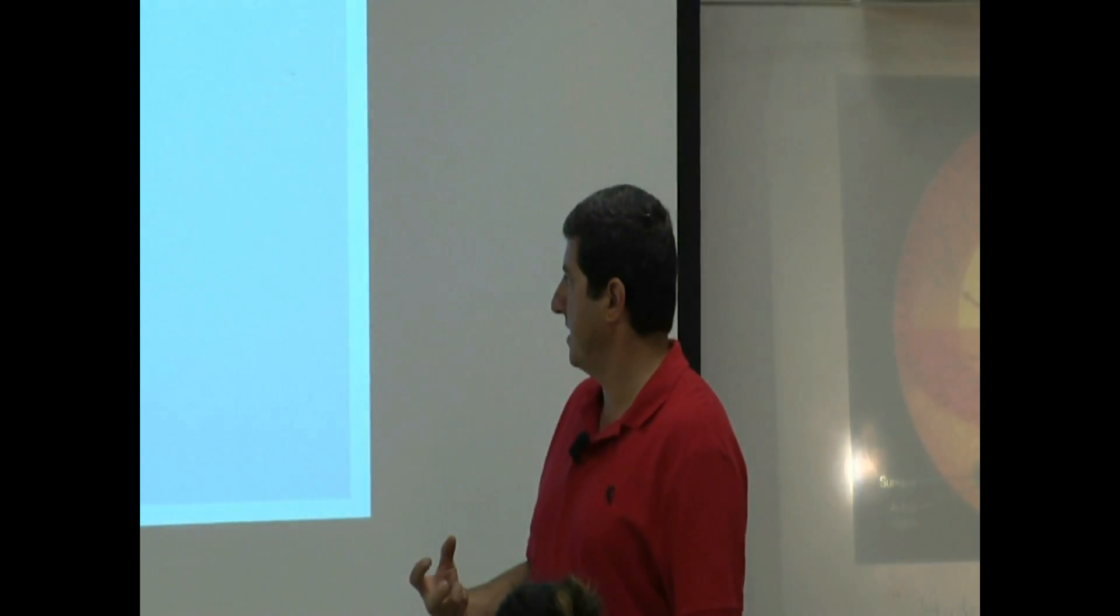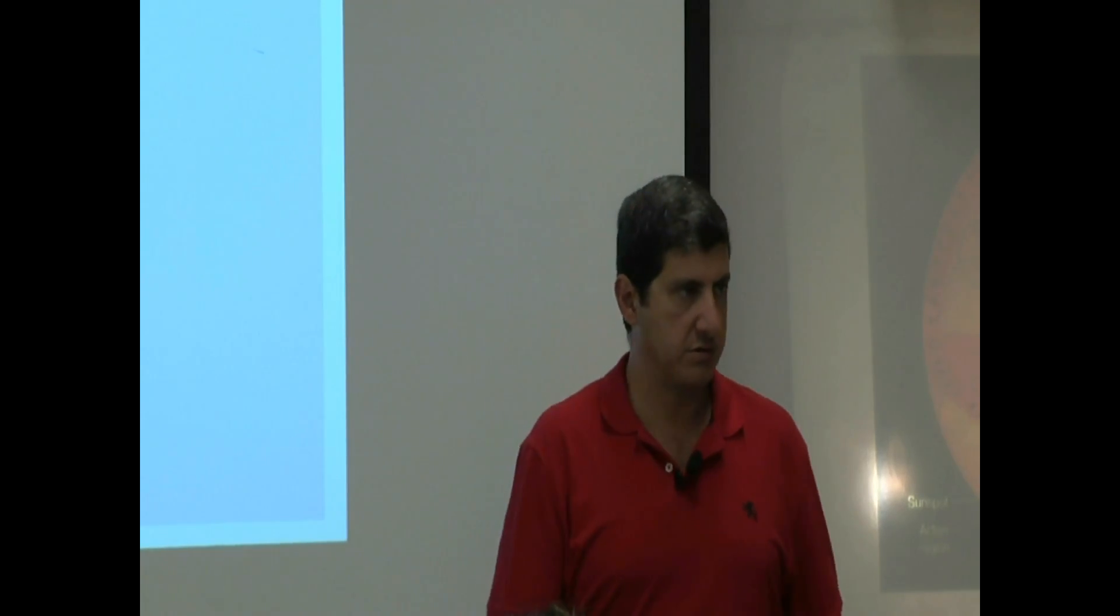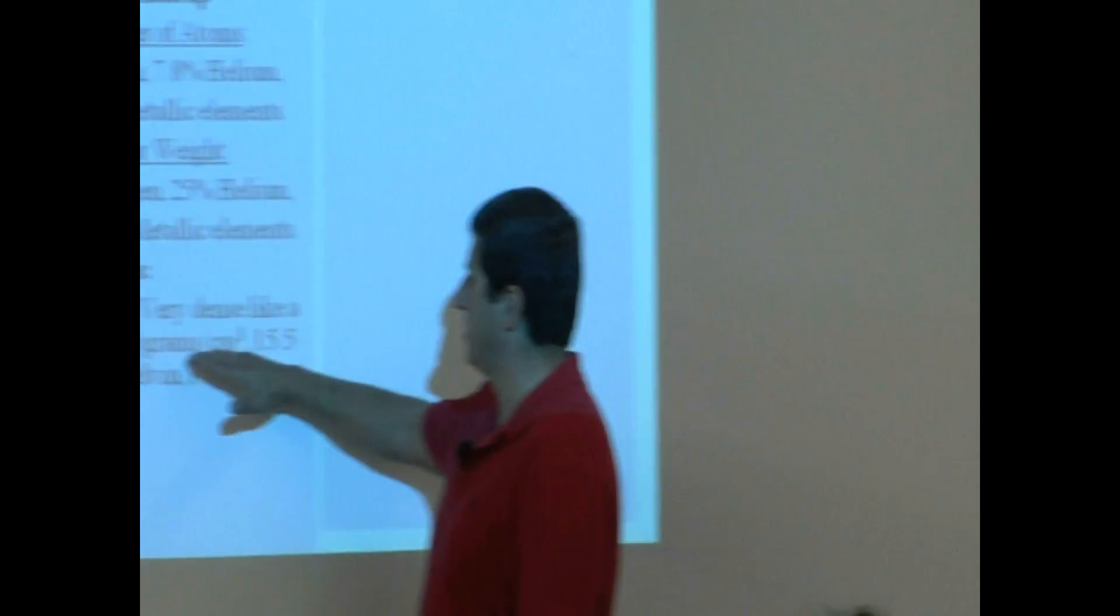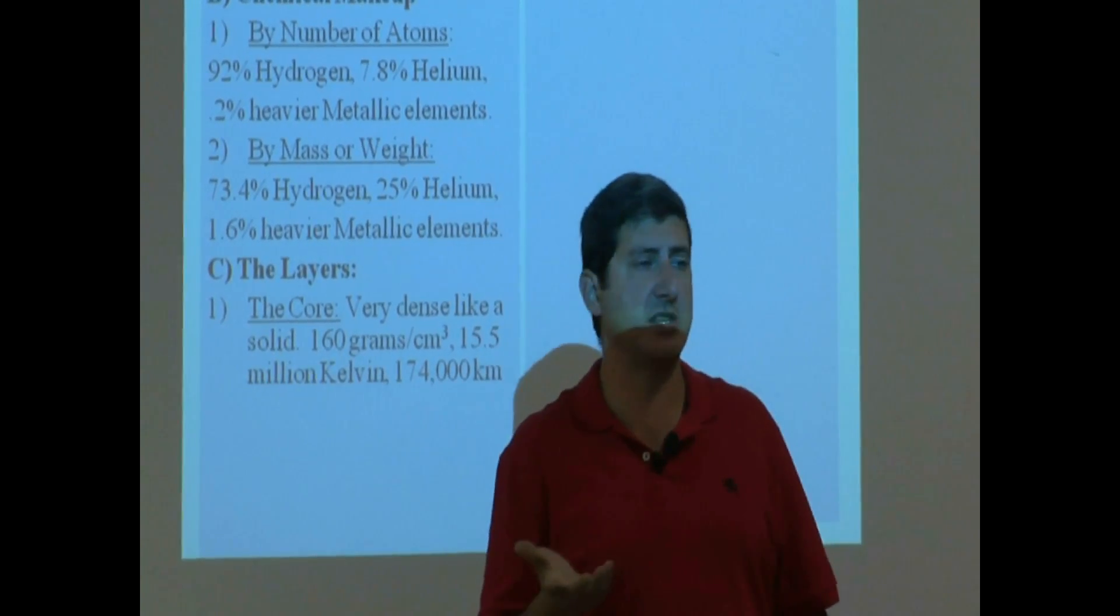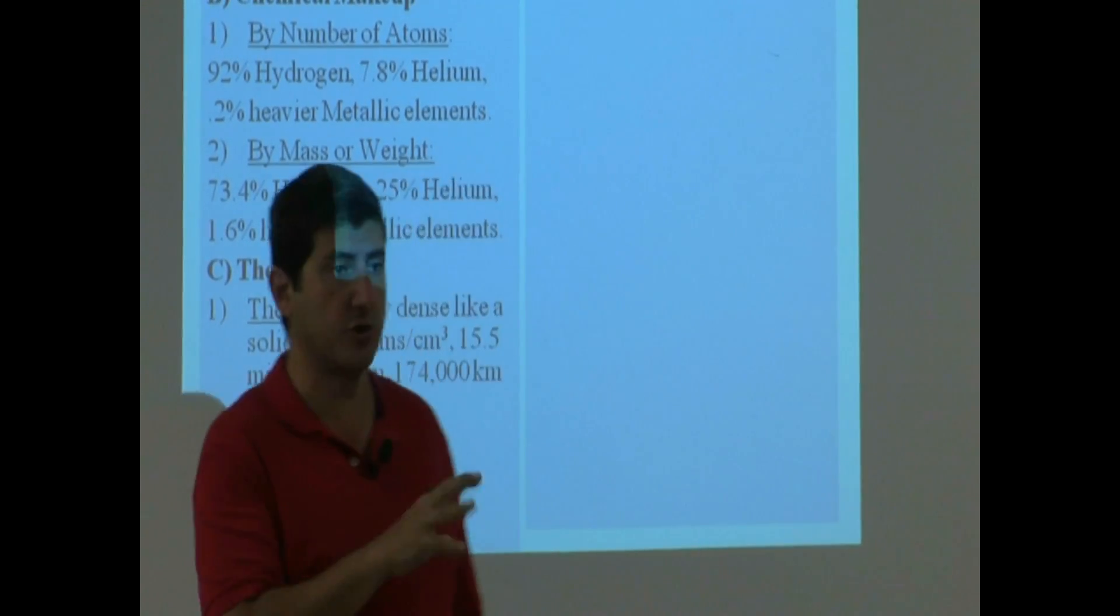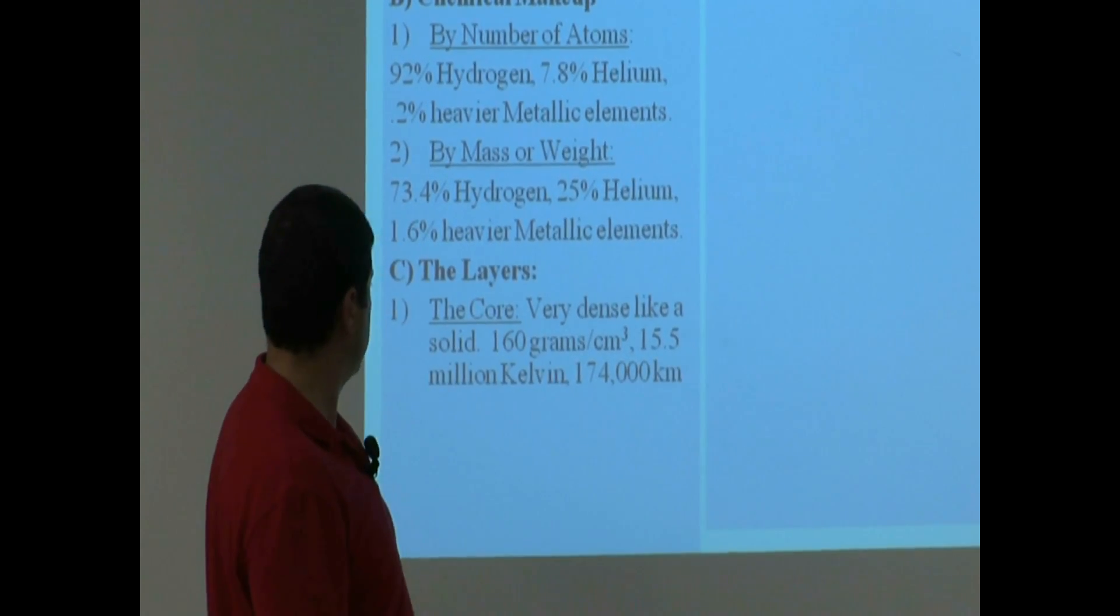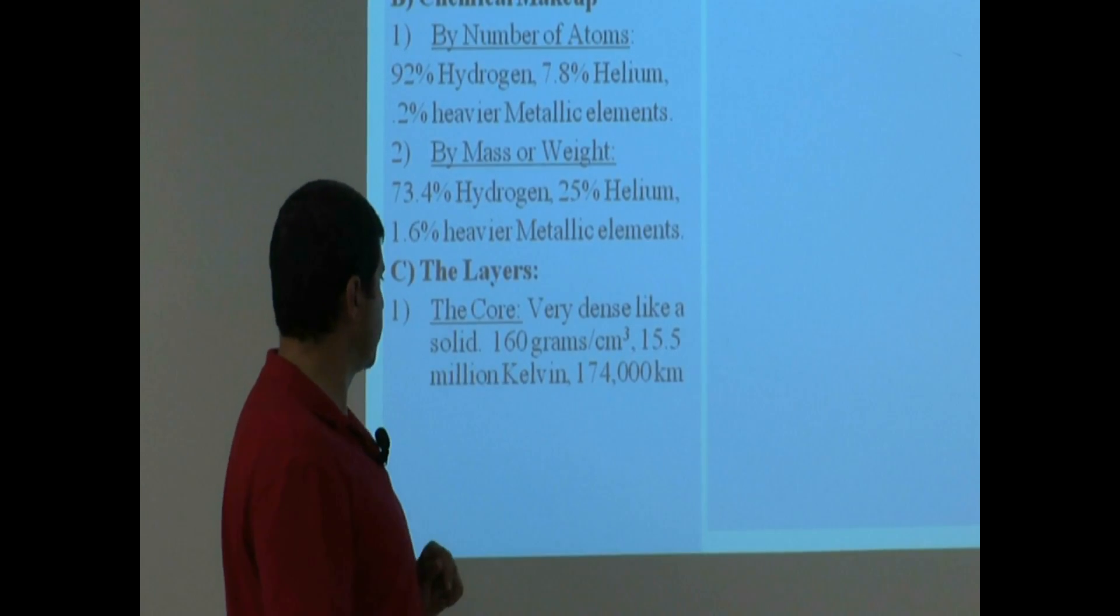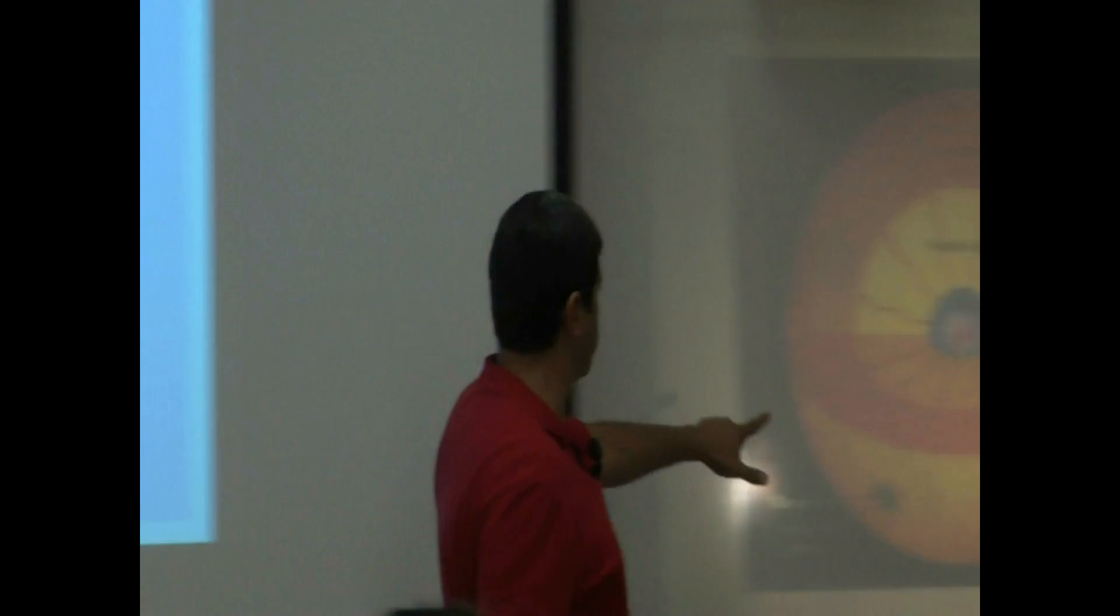The core is very dense, and it is so dense that even though it's gaseous, it has a density higher than solids on Earth. Its density is 160 grams per cubic centimeter. On Earth, like the elements, the densest element, maybe platinum, is about 22 grams per cubic centimeter, so the density of the core of the sun is even higher than that. Every cubic centimeter is 160 grams. Its temperature is 15.5 million Kelvin, and its size, the radius, is 174,000 kilometers, so you see this is the core right here.